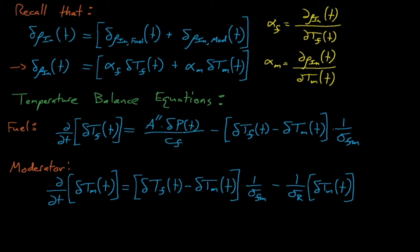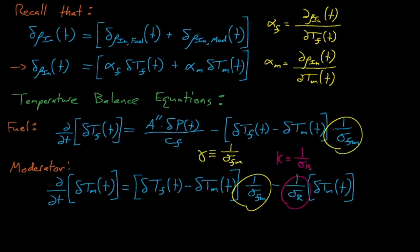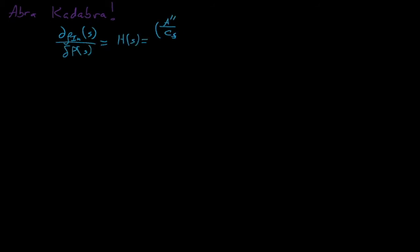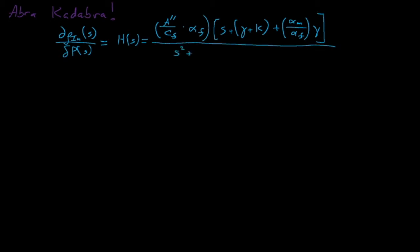For simplicity, we'll define gamma and kappa, where gamma equals 1 divided by sigma_fm, and kappa equals 1 divided by sigma_r. After taking the Laplace transform of both equations and subjecting ourselves to a fair bit of algebra, we arrive at this expression for the reactor feedback control element h(s).